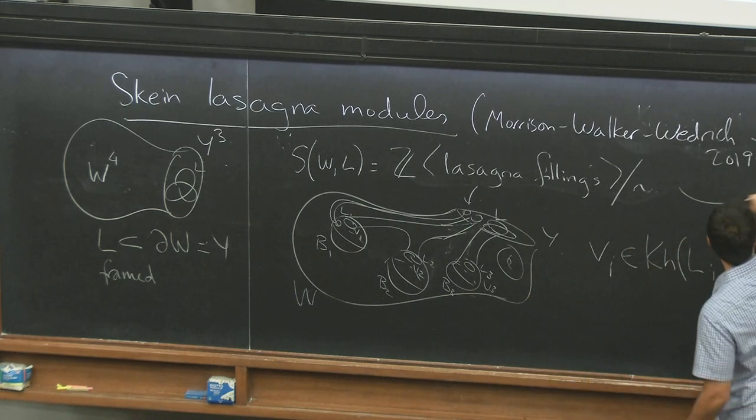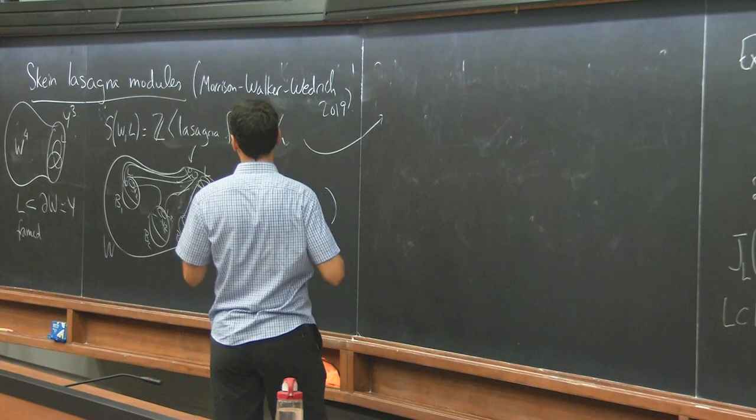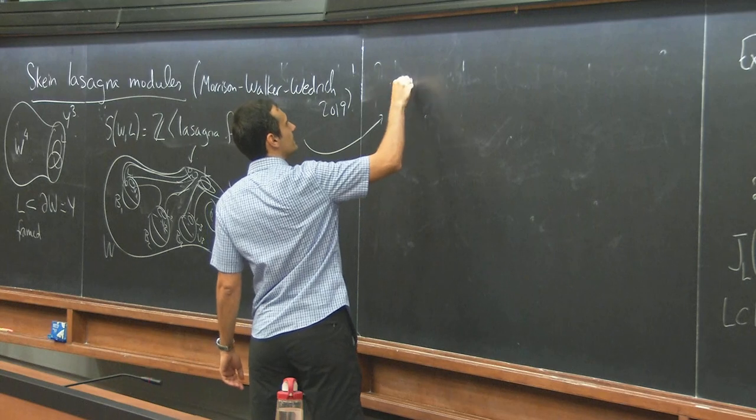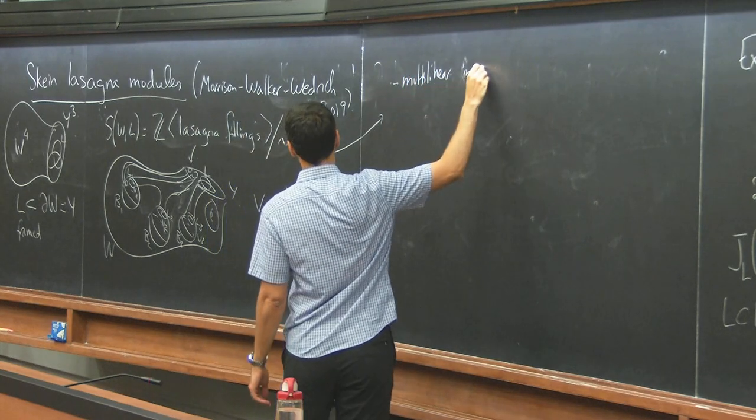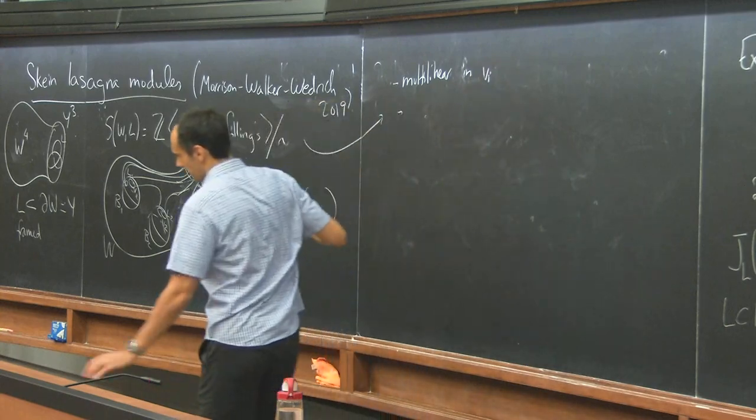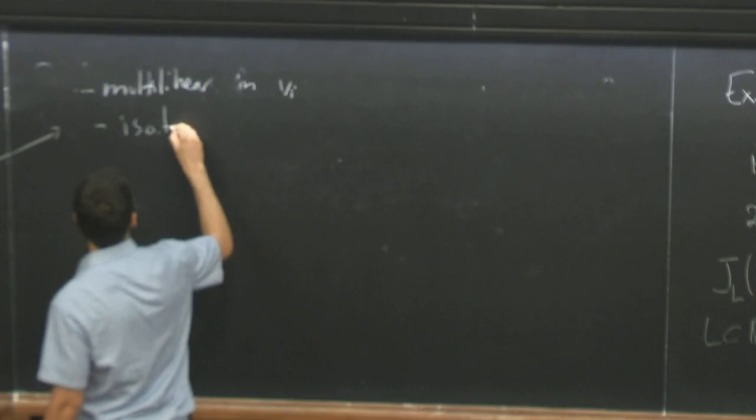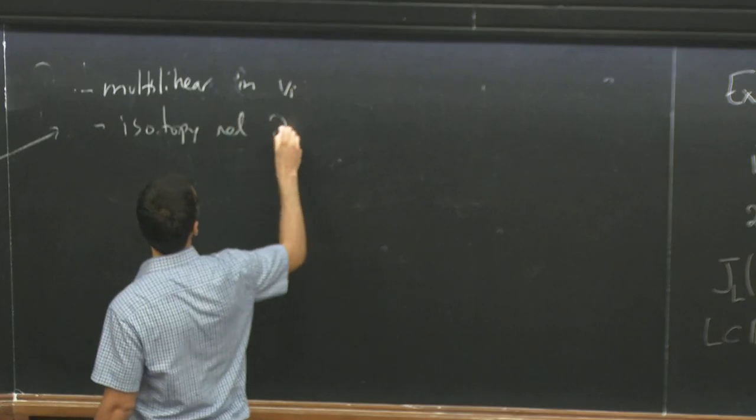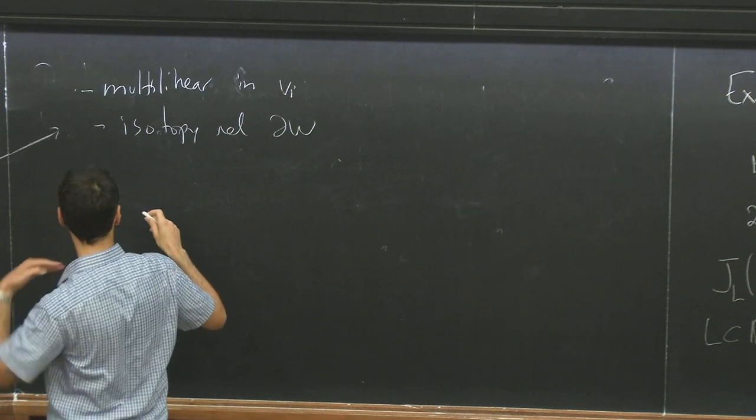The equivalence relation is given by, well, okay, so you want it to be multilinear in the VIs and, okay, well, isotopy of the boundary. But more importantly, you can fill in one of the balls.